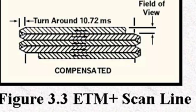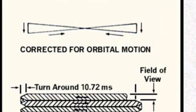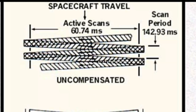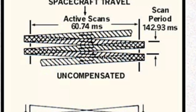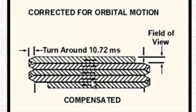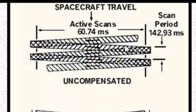The Landsat sensors use a scanning mirror, and as part of that, there's a scanline corrector. Without the scanline corrector, the image has gaps. The scanline corrector corrects for orbital motion to produce a seamless image. Unfortunately, in Landsat 7's Enhanced Thematic Mapper, the scanline corrector failed on May 31, 2003. All Landsat 7 ETM+ data acquired after that date will have gaps due to that scanline corrector failure.